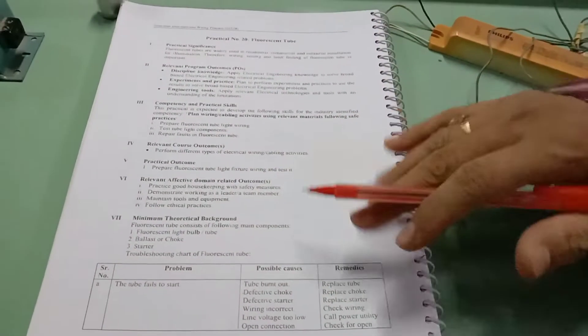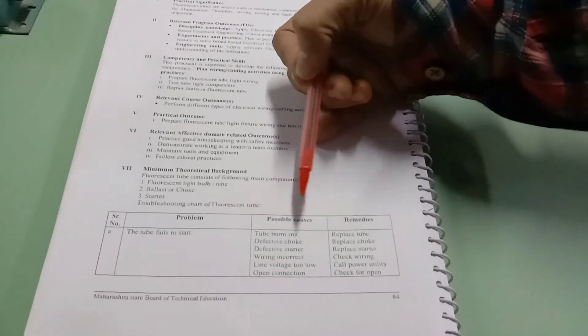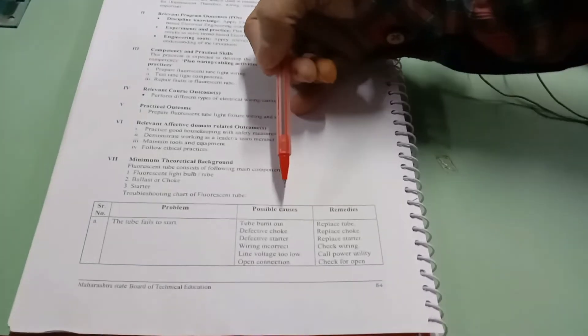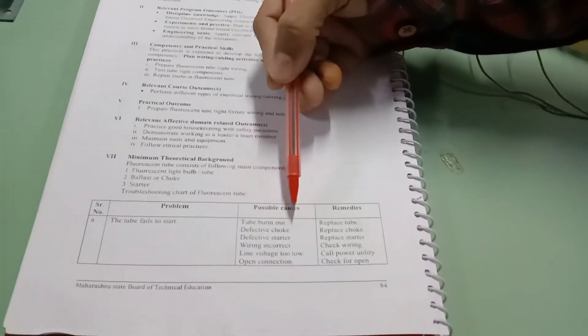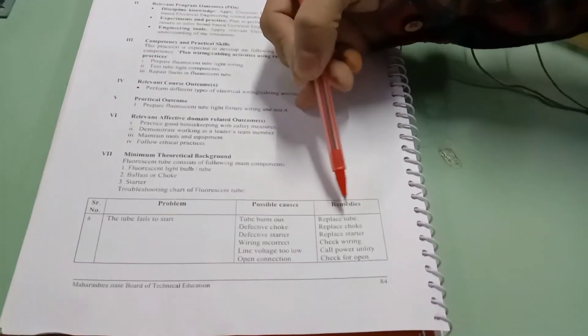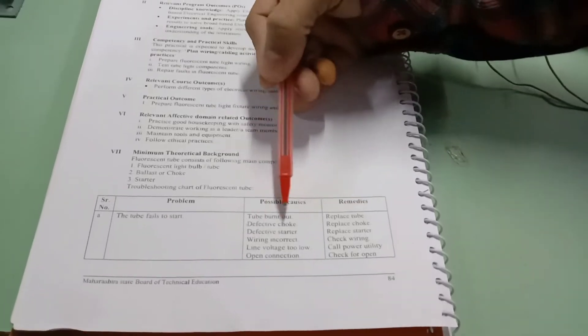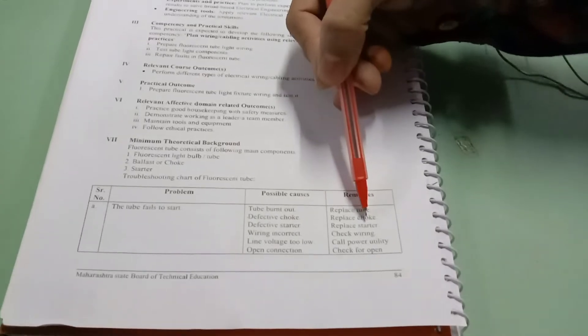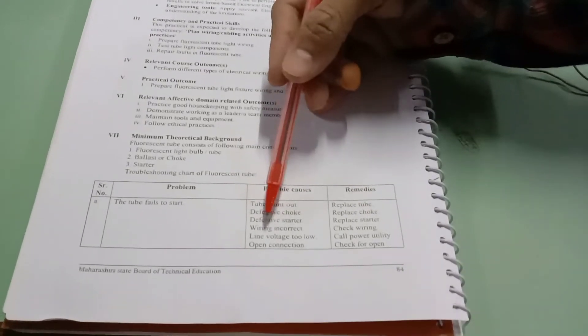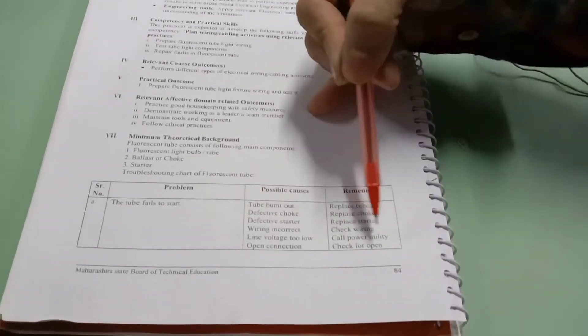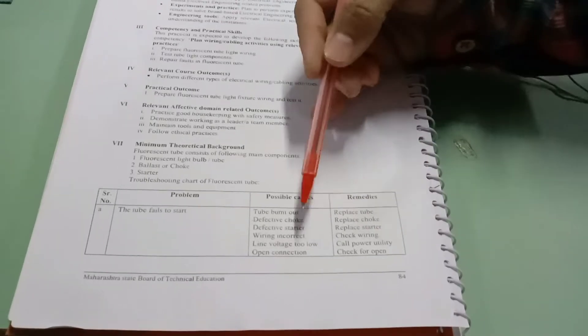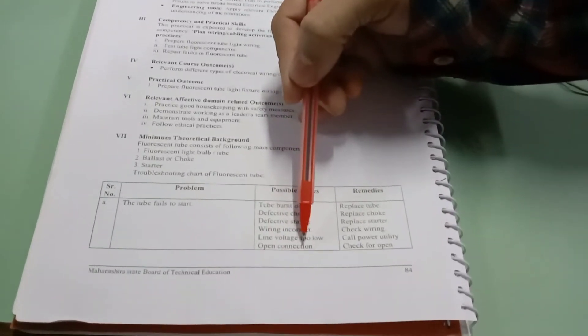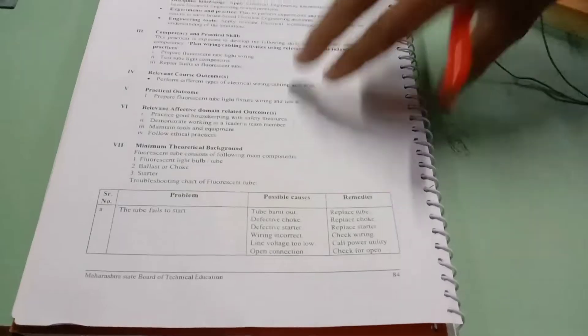Before studying this practical we should know about the troubleshooting charts. When the tube light fails to start, the possible cause is tube burnout. Remedies are we have to replace that tube light. If the defective choke is there then we have to replace. If defective starter is there then we have to replace it. If line voltage is too low then we have to call the power utility. If open connections are there then we have to check for the open connection.